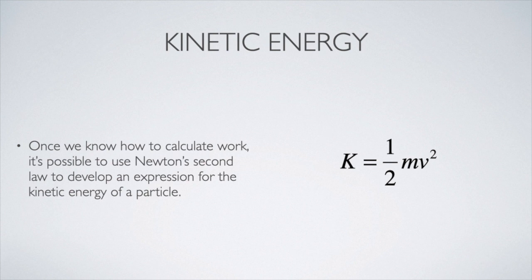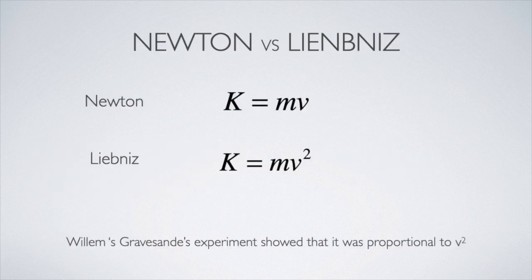The derivation of this is presented in your textbook - I'm not going to go through it here in this lesson. Interesting historical sidelight: in addition to arguing over who invented calculus, Newton and Leibnitz also argued over what the proper form was for what we today call kinetic energy. Newton thought it should be proportional to v, Leibnitz thought it should be proportional to v squared. A Dutch scientist named Willem's Gravesande did a very famous and clever experiment that showed that Leibnitz was closer to being correct.